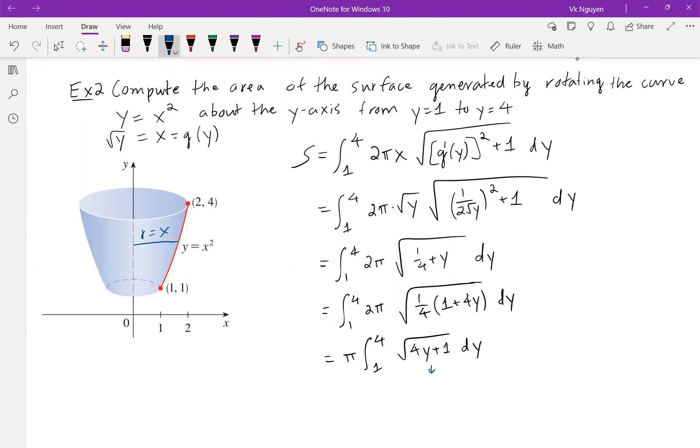And then from here, u sub is pretty clear. u equals 4y plus 1, du is 4 dy. The upper limit is 4 times 4 plus 1, so 17. The lower limit is 4 times 1 plus 1, that's 5. Pi integral from 5 to 17 root u, dy is 1 fourth du, so 1 fourth.